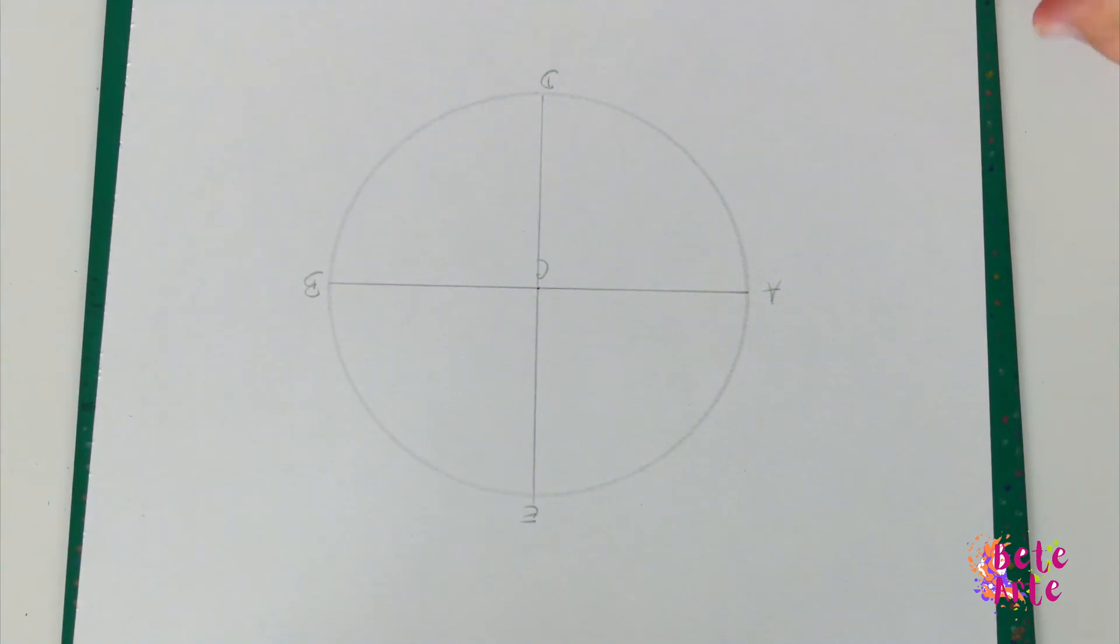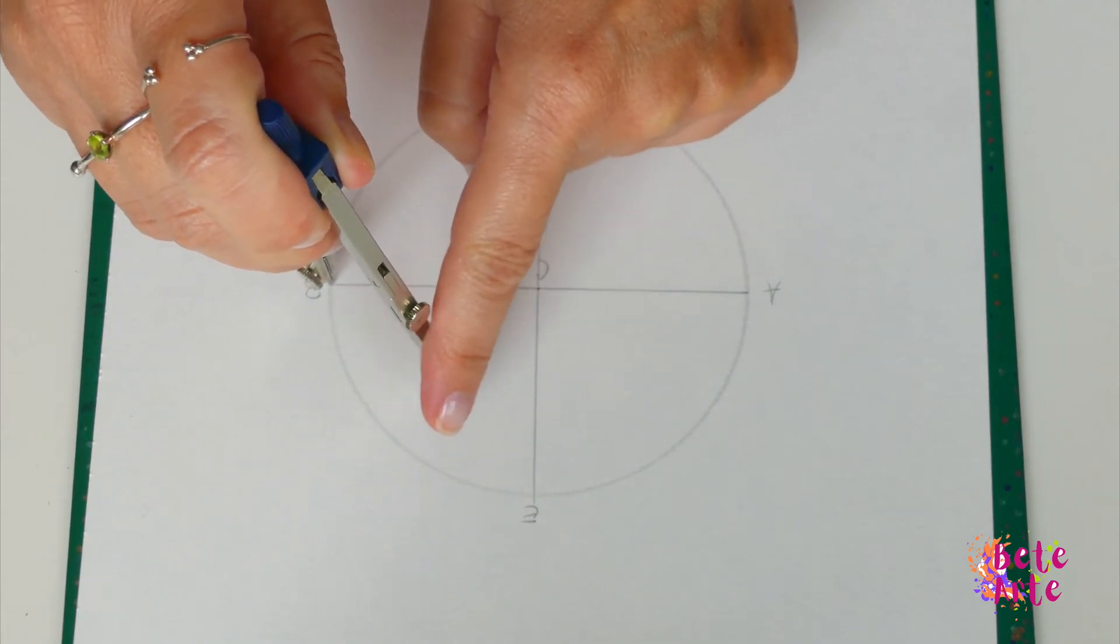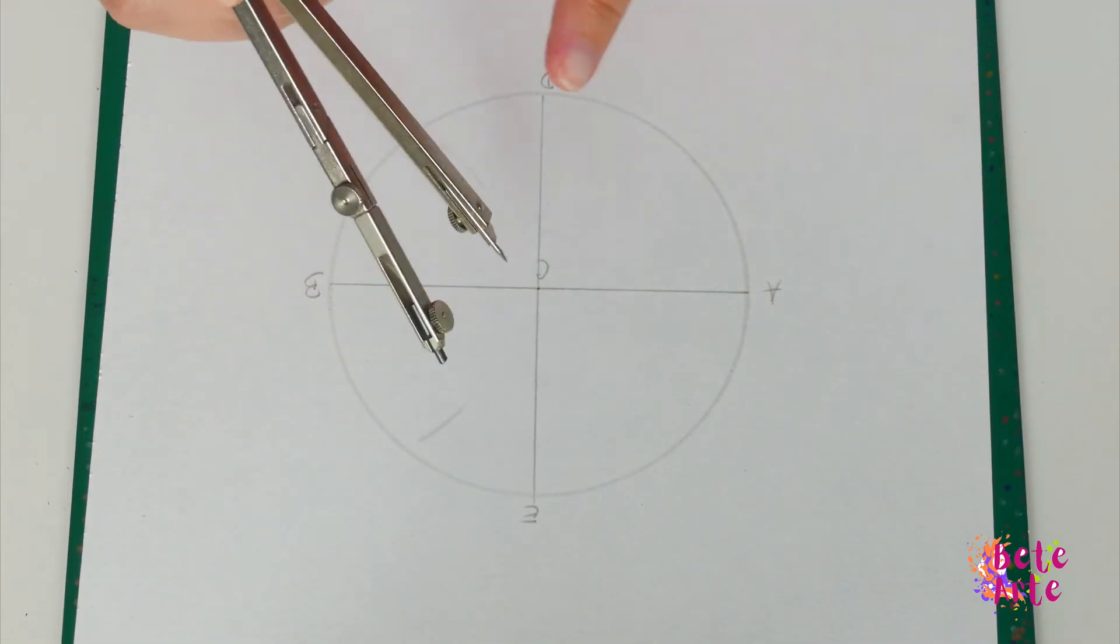To find the midpoint of B, C, put the compass needle on points B, C and draw two arcs above and below.